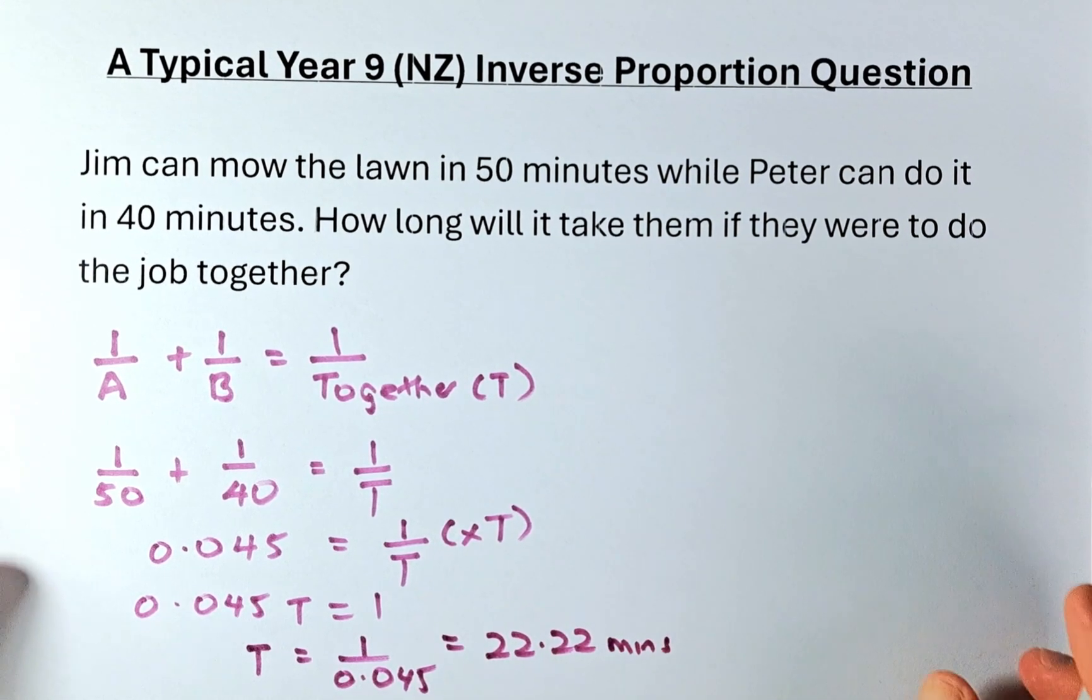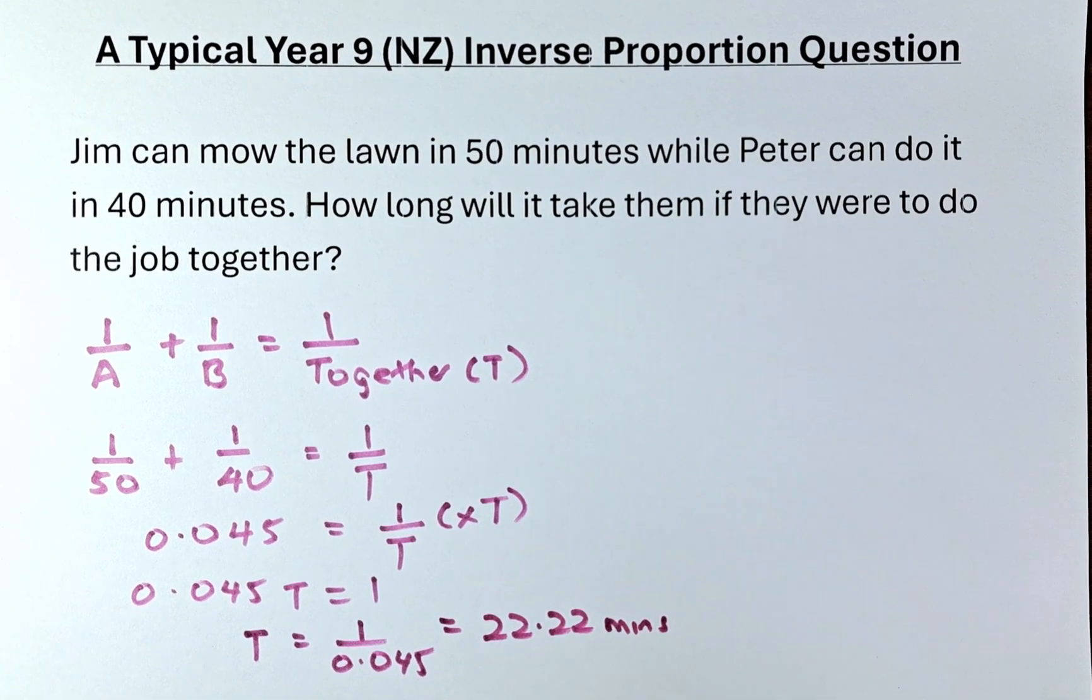So this is a way to using the formula 1 over A plus 1 over B equals to 1 over T. And you solve it together.